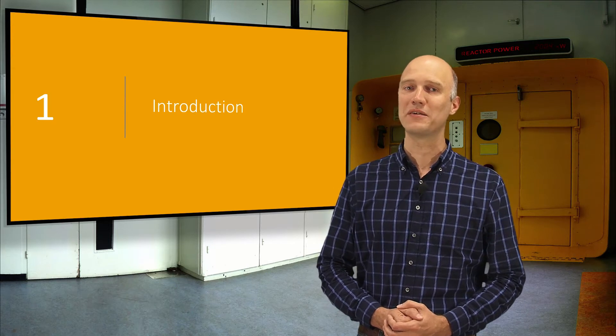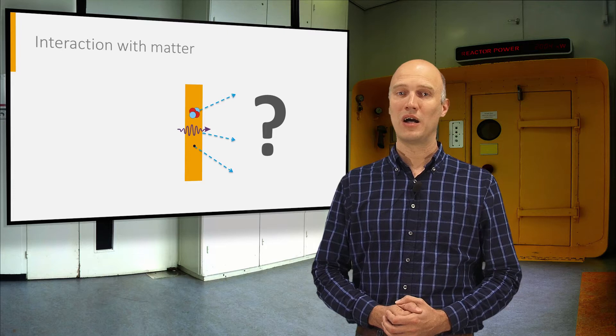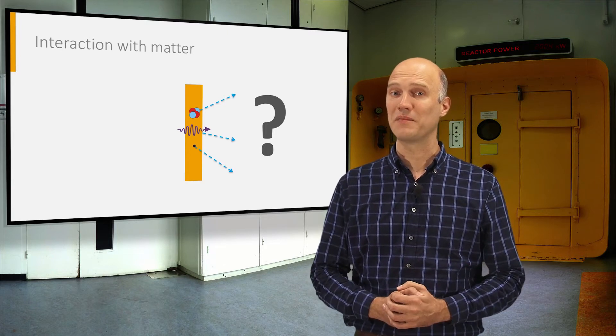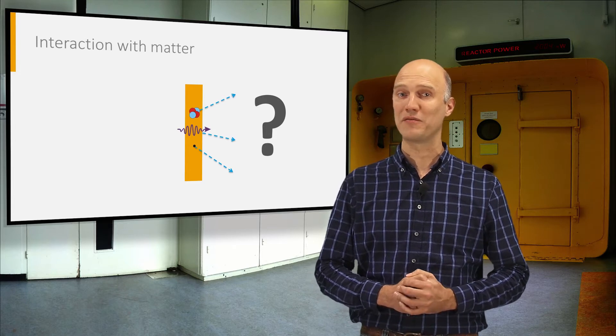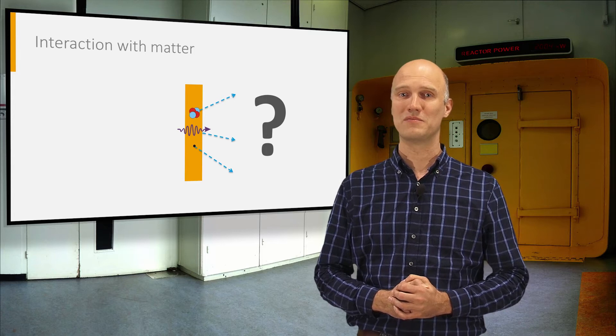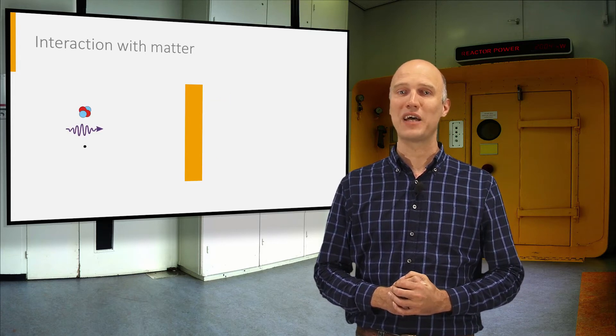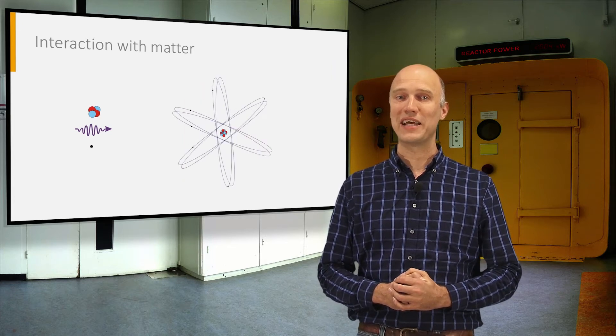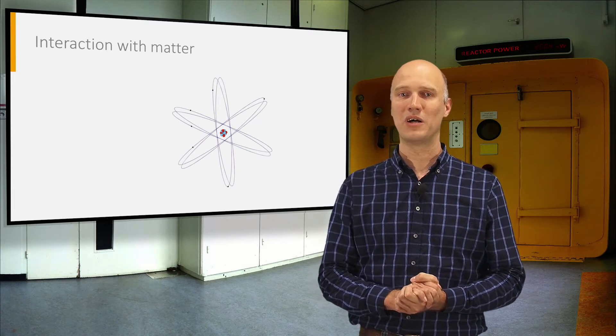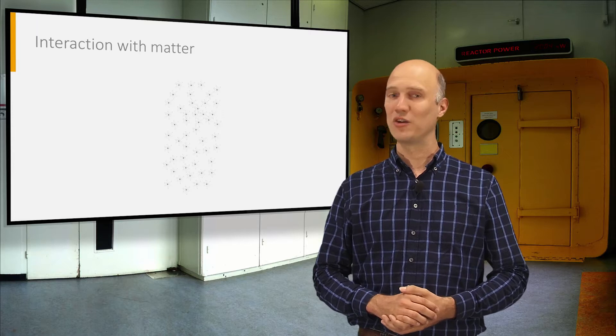When radiation passes through matter, it will interact with the atoms of the material it passes through. How will it interact, and how probable is the interaction? This will depend on the type and energy of radiation and the type of matter it is passing through. Charged particles and photons will mainly lose energy or be scattered by interactions with the electrons circling the atoms of the material they pass through. We can state that their interaction is mainly determined by atomic physics.